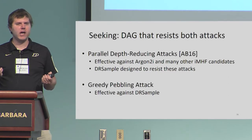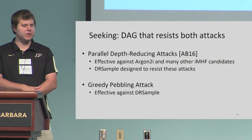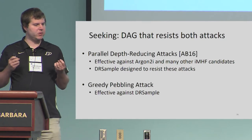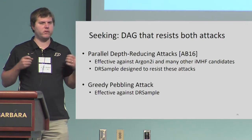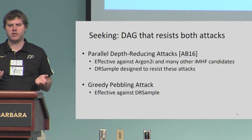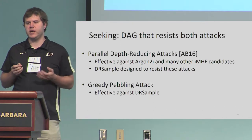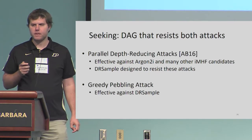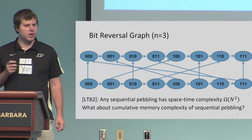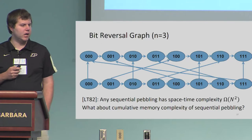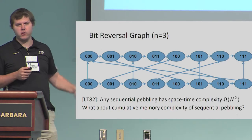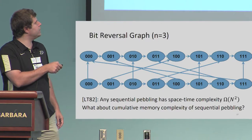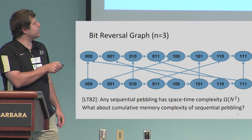We have an attack that is surprisingly effective against DR sample, and we'd like to construct a new DAG that provides strong resistance to both attacks. The parallel depth-reducing attacks from Crypto 2016 were especially effective against Argon2i and many other IMHF candidates. DR sample was specifically designed to resist those attacks, but as we showed, the greedy pebbling attack is effective against DR sample. To construct a DAG that resists both, we start with the bit-reversal graph. We represent each node by a bit sequence with two layers, and add an edge based on bit reversal — for example, node 0,1,1 connects to 1,1,0.